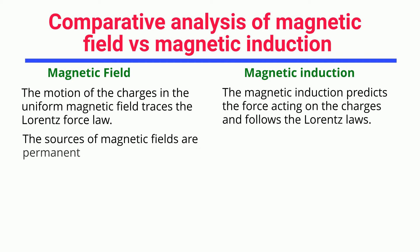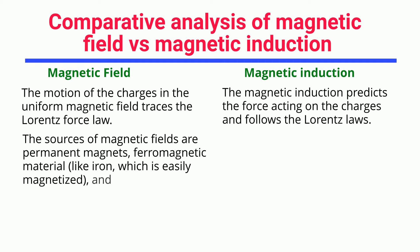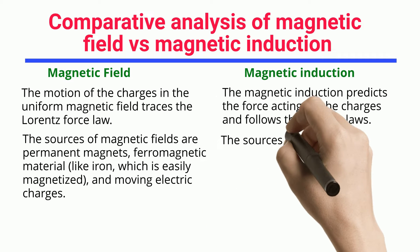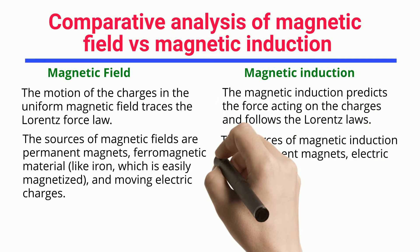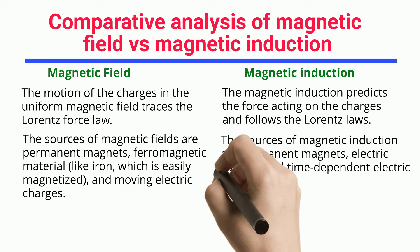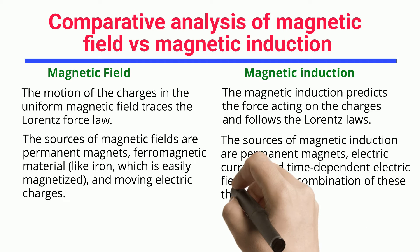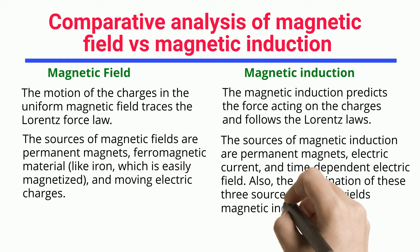The sources of magnetic fields are permanent magnets, ferromagnetic material like iron, which is easily magnetized, and moving electric charges. The sources of magnetic induction are permanent magnets, electric current, and time-dependent electric field. Also, the combination of these three sources together yields magnetic induction.